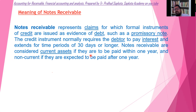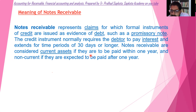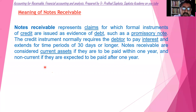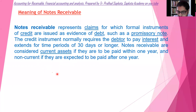The credit instrument normally requires the debtor to pay interest and extends for a time period of 30 days or longer. The number of accounts receivables are considered current assets.